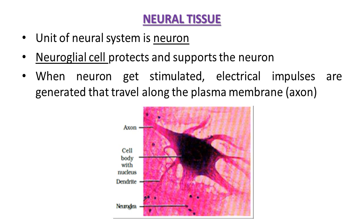The fourth type of tissue is neural tissue. It is the unit of our nervous system and is known as the neuron or nerve cell. Neural tissue exercises the greatest control over the body's responsiveness to changing conditions. Neurons are excitable cells. Neuroglial cells protect and support neurons. When a neuron is stimulated, electrical impulses are generated and travel along the plasma membrane.